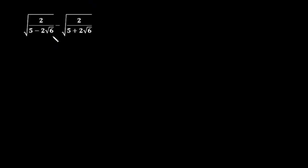Hello friends, in this lecture we are going to simplify this given expression: 2 over the square root of (5 minus 2 times square root of 6), minus 2 over the square root of (5 plus 2 times square root of 6). There is a minus sign in between. Before I move on, please subscribe to my channel and like this video.